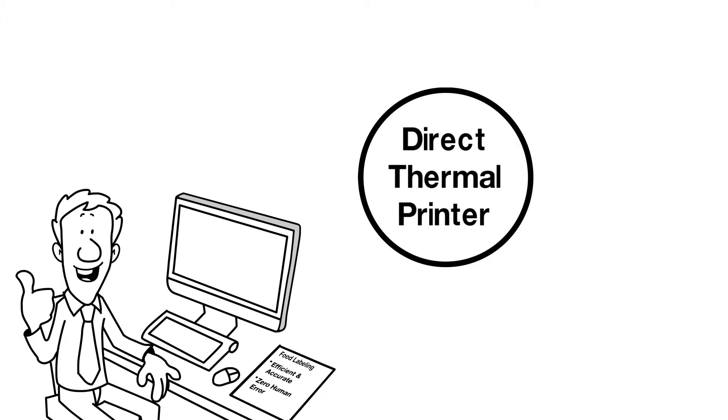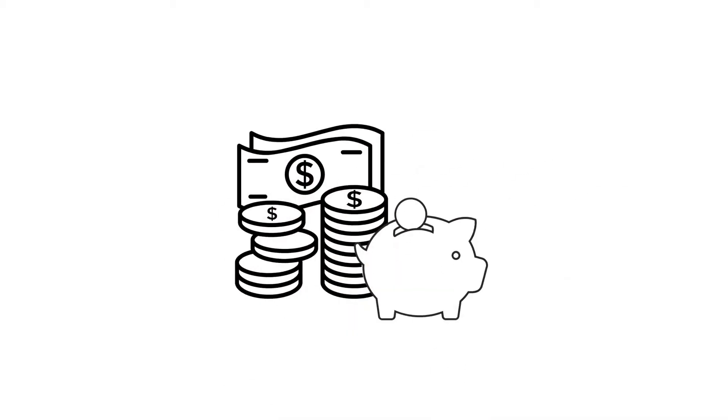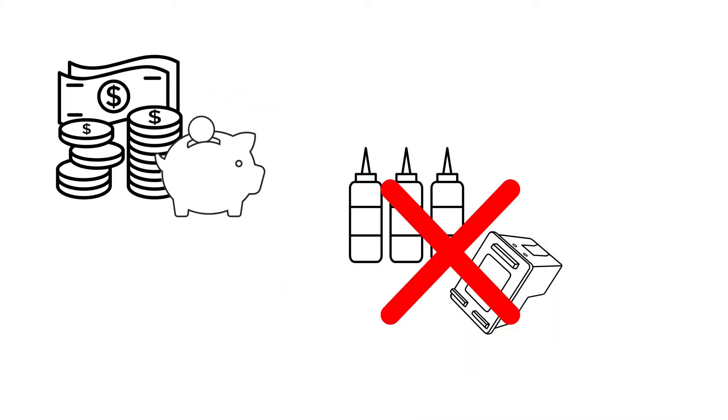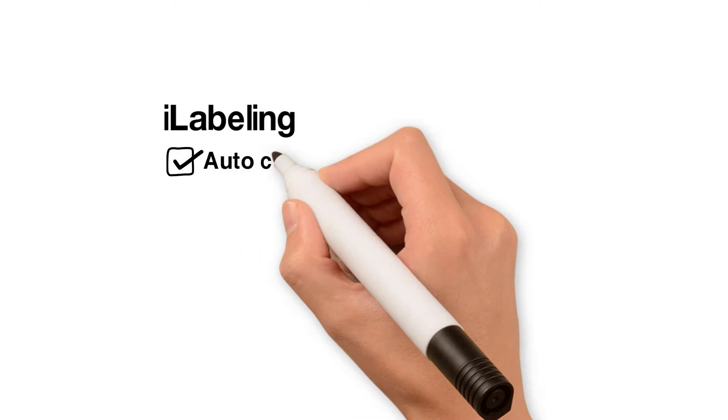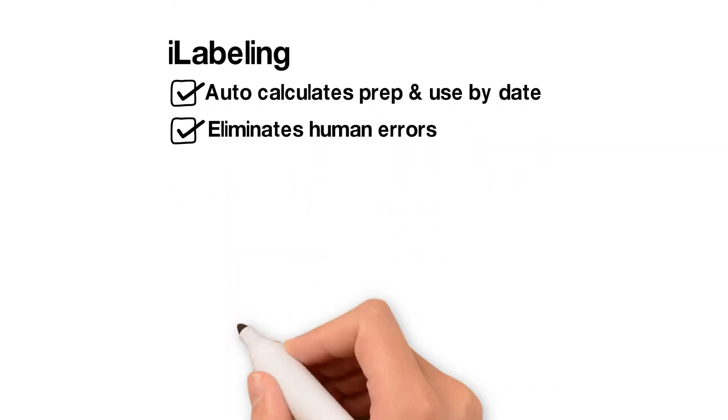iLabeling is a direct thermal printer saving you hundreds of dollars on ink and cartridges. iLabeling auto calculates prep and use by date to eliminate any human error.